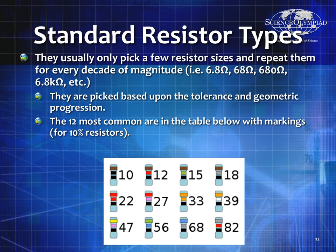There are 12 standard resistor types: 10, 12, 15, 18, 22, 27, 33, 39, 47, 56, 68, and 82. These are the most common resistors, based on their tolerance and geometric progression. For example, to make a 5-ohm resistor, take two 10-ohm resistors and put them in parallel. Using these standard values in combinations, you can create virtually any resistance you want.